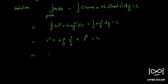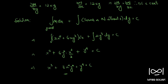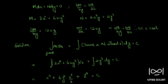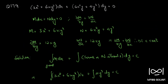Simplifying, we get x³ + 3x²y² + y⁴ = c. This is the final solution to question number 179.